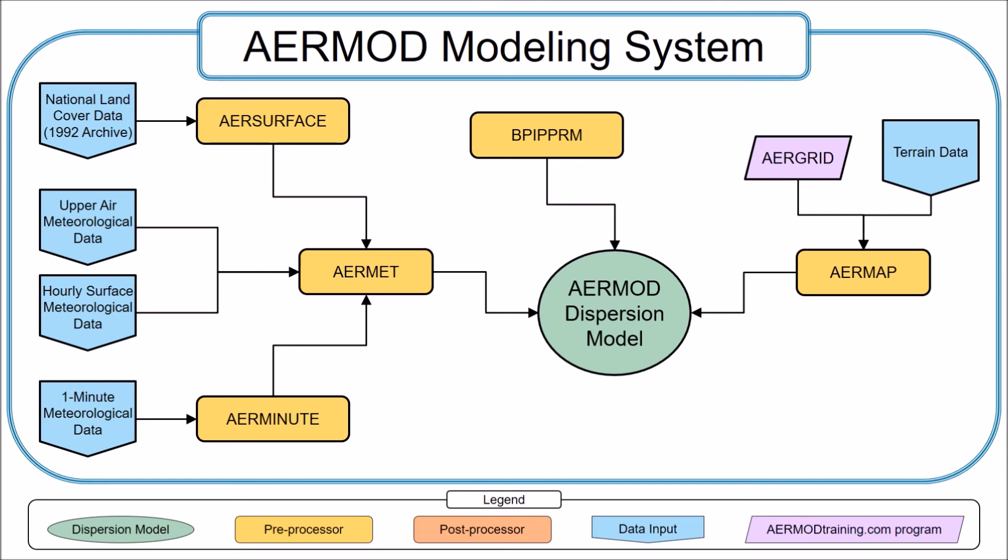The last preprocessor deals with building downwash. BPIPPRM is used to calculate the downwash inputs for each point source based on the layout of nearby buildings. At this point we've gone over all the preprocessors and you should have all the data needed to set up and run AERMOD.